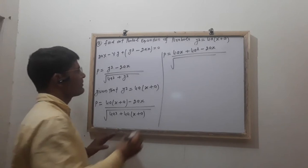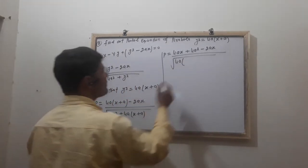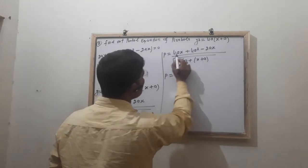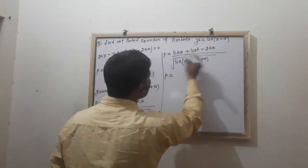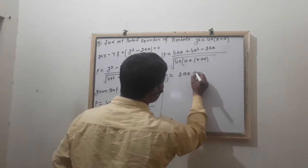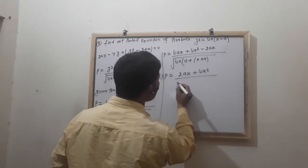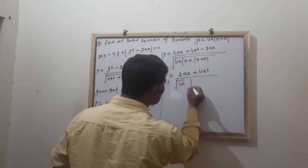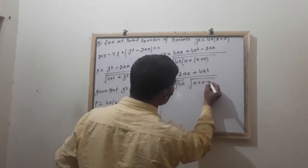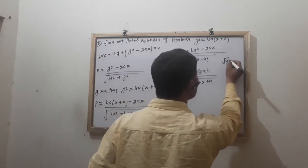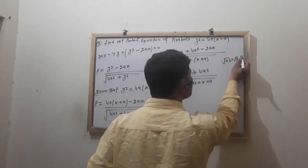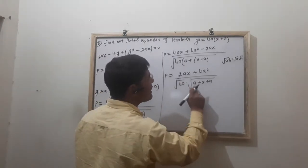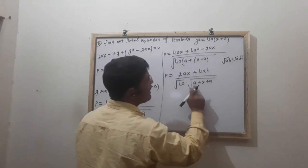Taking 4A common from the expression. The numerator becomes 4AX plus A minus 2AX, which simplifies to 2AX plus 4A square. The denominator under the root can be written as 4A into X plus A, so under root 4A into under root X plus A.